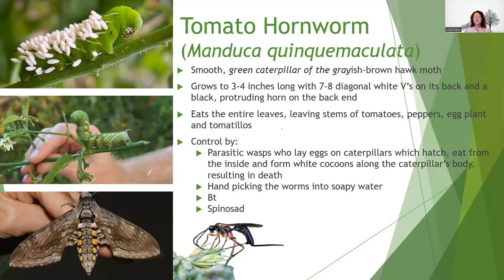Tomato hornworms — some people plant extra tomatoes and just let them do their thing, because the moths are really cool. If you see a caterpillar that has what looks like white rice grains on it — those are parasitic wasp cocoons — leave it, because that's nature taking care of things. You can also handpick them and drop them in soapy water. Chickens love them. BT will work, and so will spinosad. The parasitic wasp larvae eat the hornworm from the inside out.